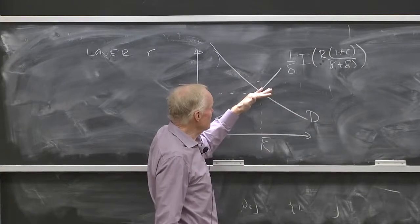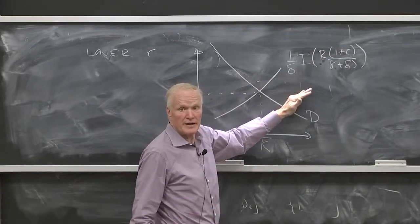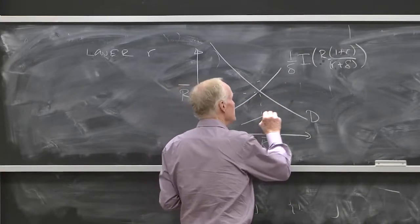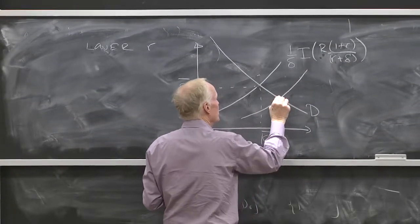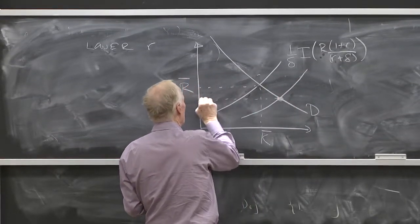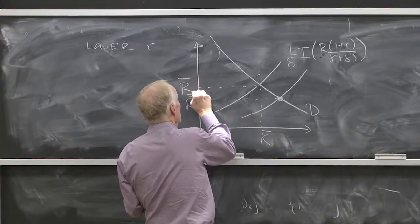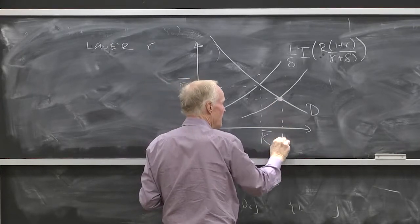That has the effect of, at any R, shifting this curve to the right. So a new steady state would be over here somewhere: R double bar and K double bar.